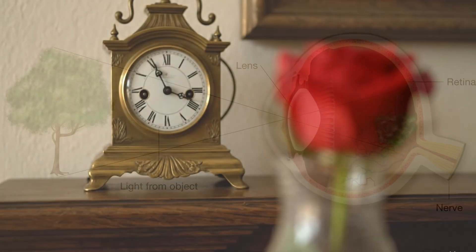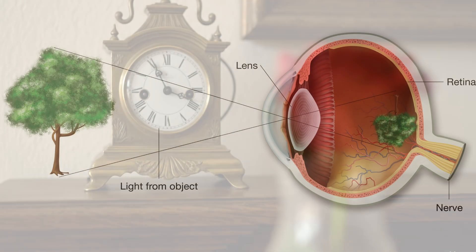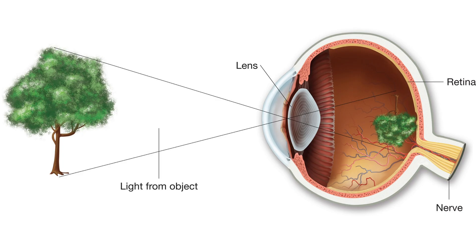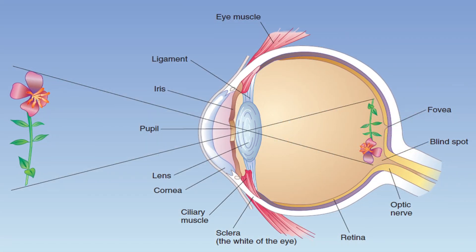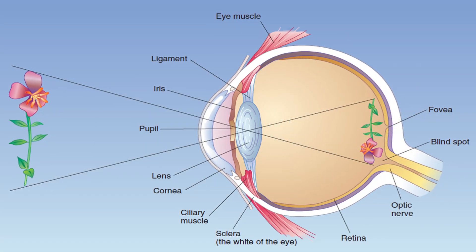Furthermore, the brain allows us to correctly distinguish between up and down. As light refracts when passing through the lens, it leaves an inverted image on the retina. Our brain reads this image and instantly flips it right side up. However, a newborn initially sees all objects upside down.